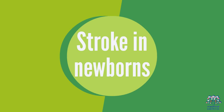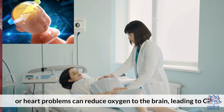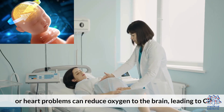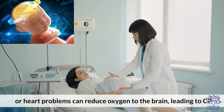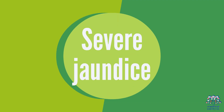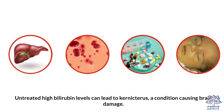Stroke in newborns: blood clotting disorders or heart problems can reduce oxygen to the brain, leading to CP. Severe jaundice is another cause — untreated high bilirubin levels can lead to kernicterus, a condition causing brain damage.